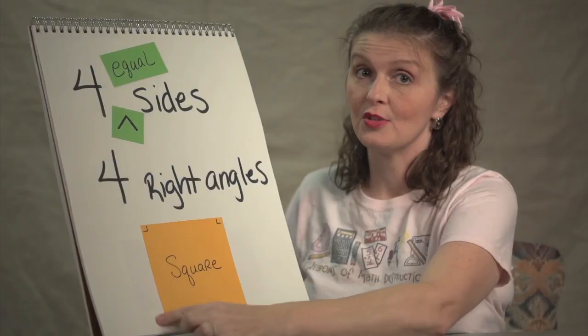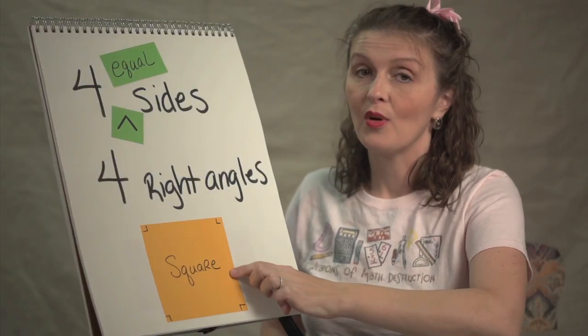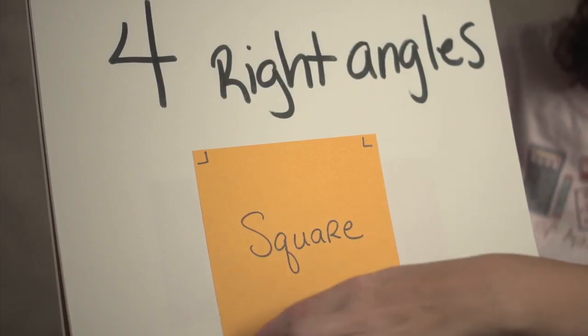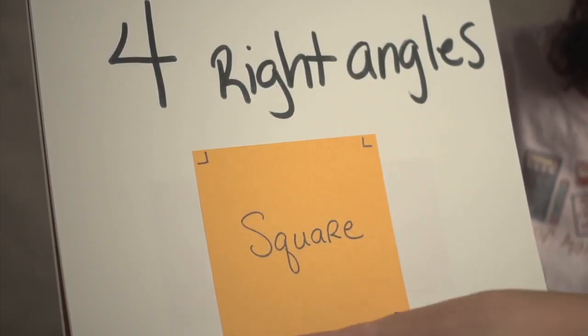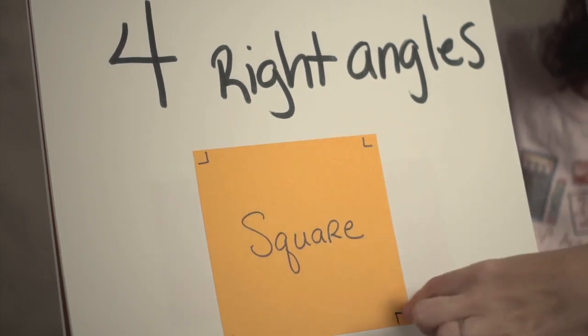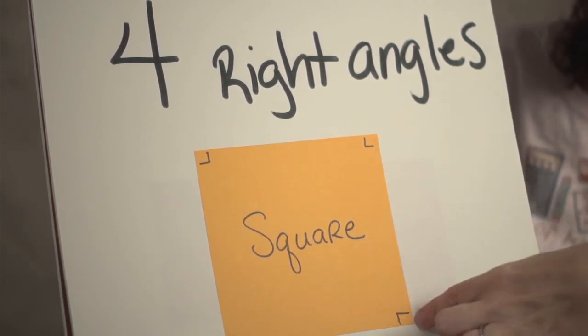So here you have a quadrilateral rectangle with four equal sides, so it's now a square. We have the four sides and we also have the four right angles, but the sides are equal.